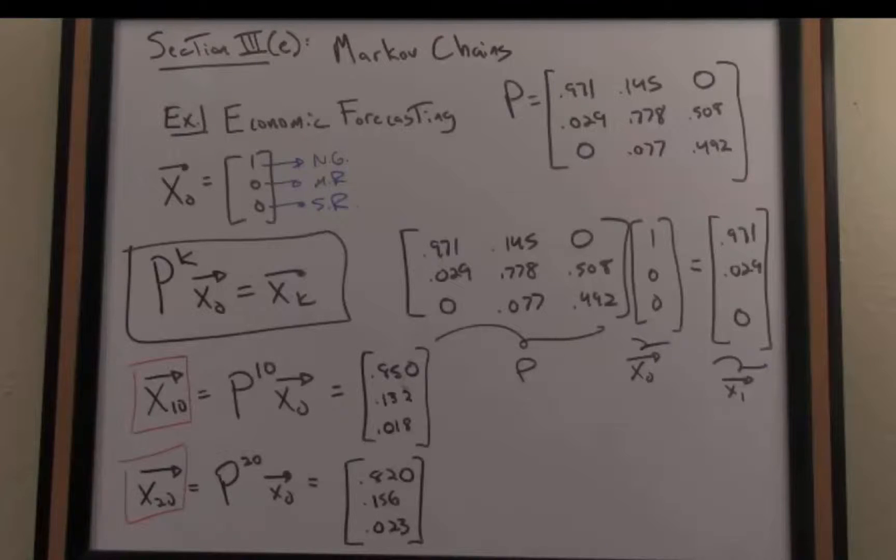And then one more time if I want to predict even further down the road 20 years let's say, I raise my stochastic matrix to the 20th power, multiplying again by the initial state vector and I get the following probabilistic outcomes.